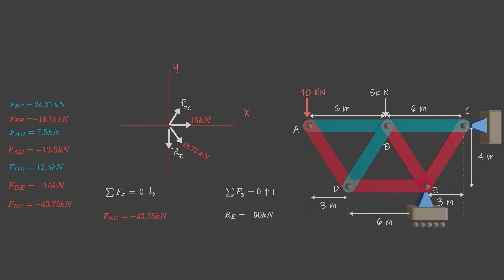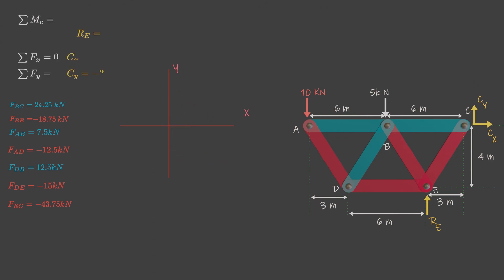If you notice, we have calculated all the member forces without calculating support reactions first. It is so because we start from joint A, and there are only two unknowns. But if you start from joint C, then you need to calculate the reaction forces first. Verify their correct sense and move on using the method of joints.